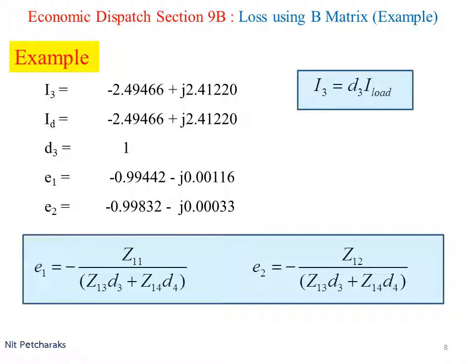Prepare data for B-metrics. Since there is only one load bus, therefore I3 equals the total load current, and the value of D3 is 1. Then calculate E1 and E2.